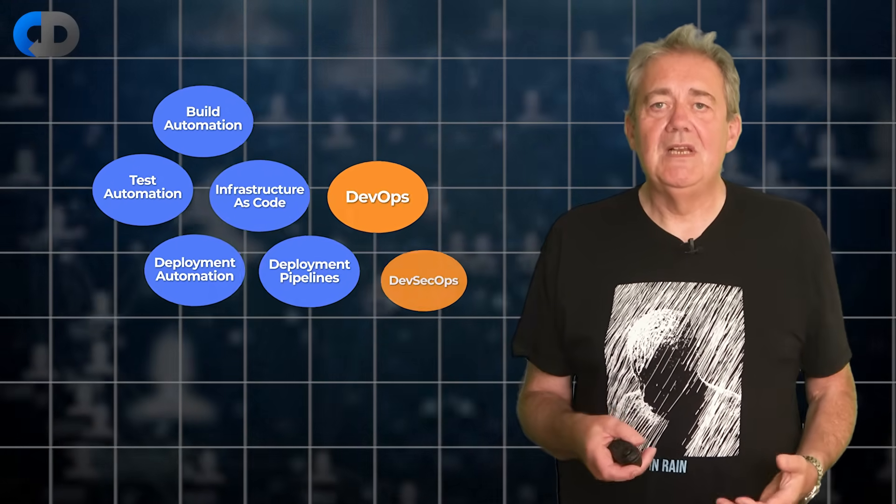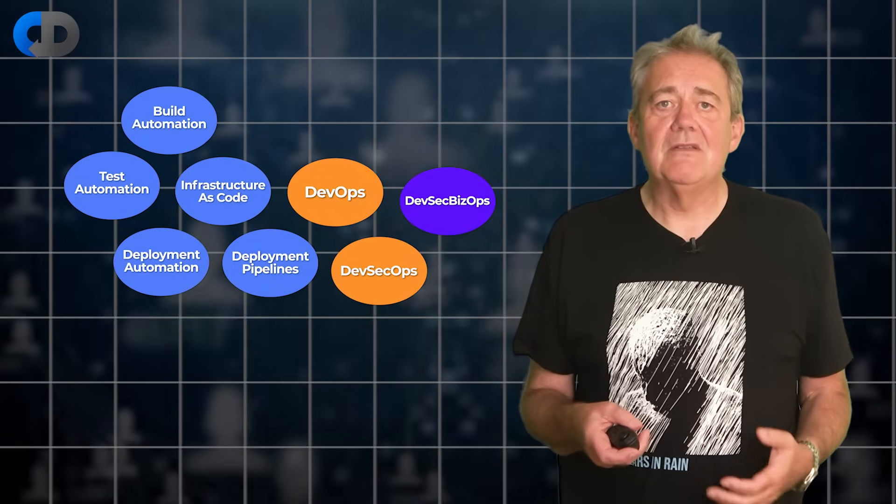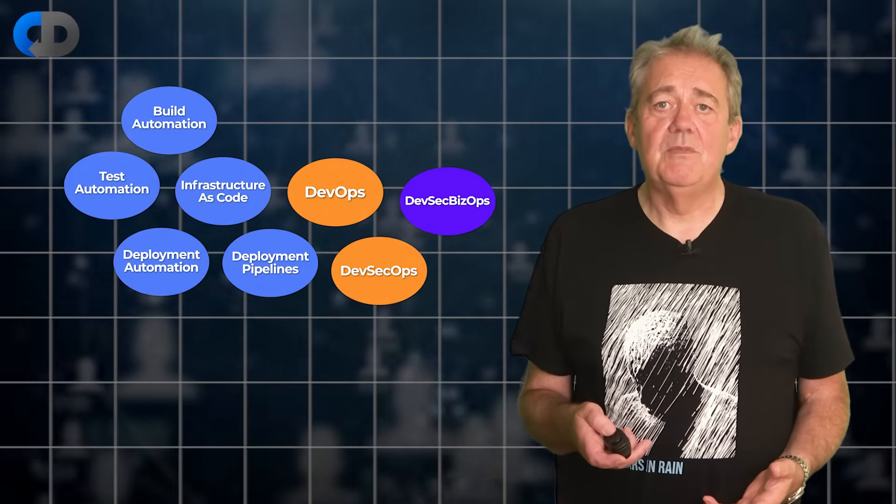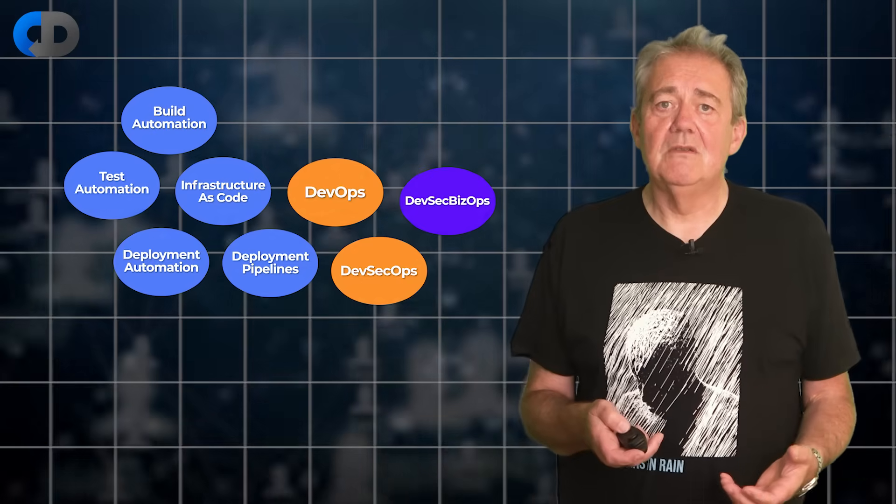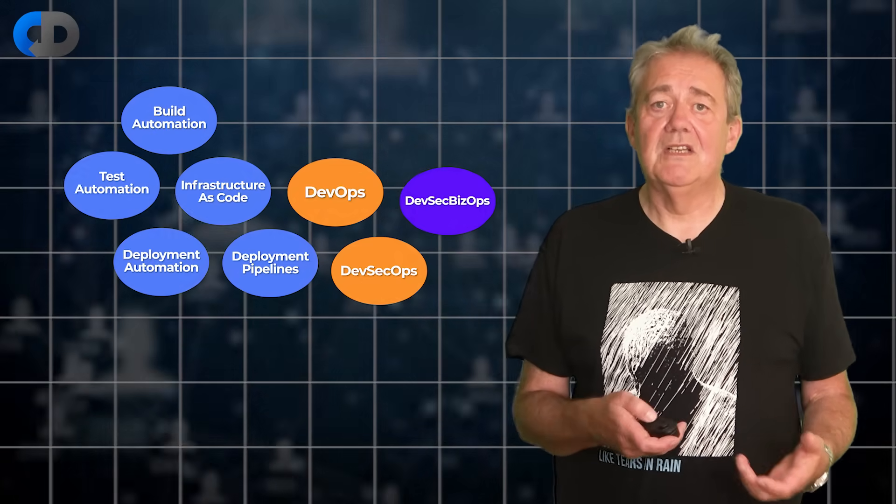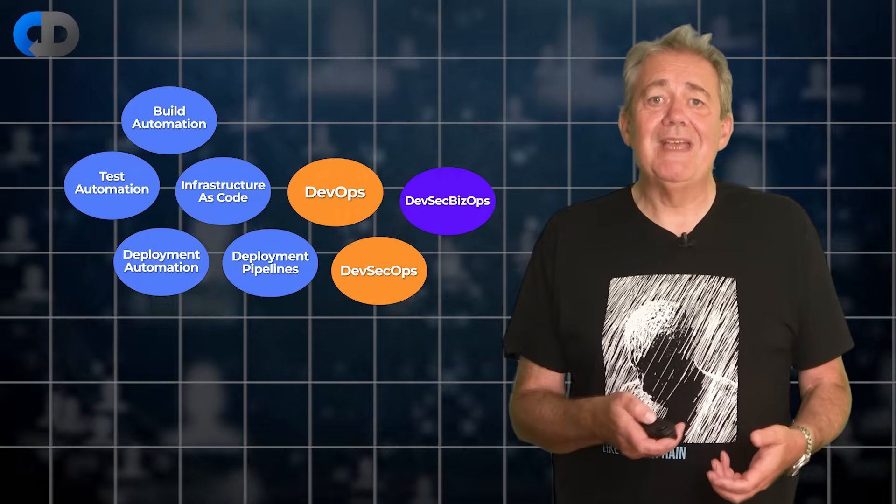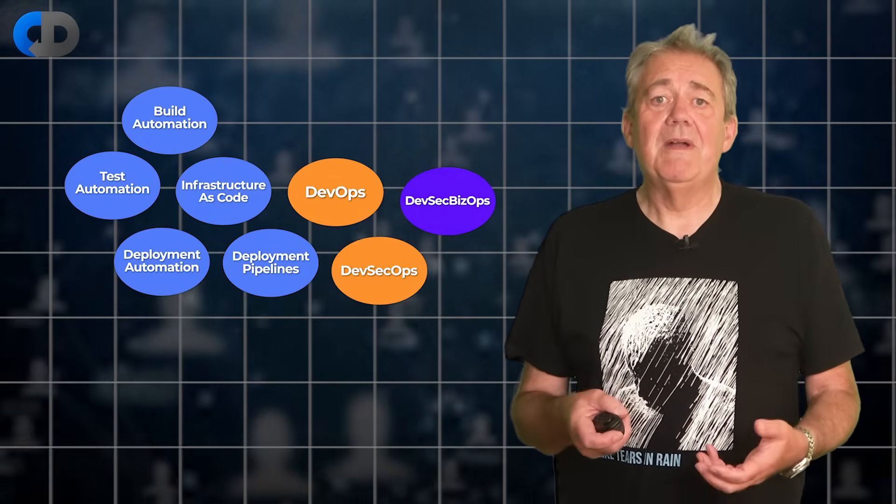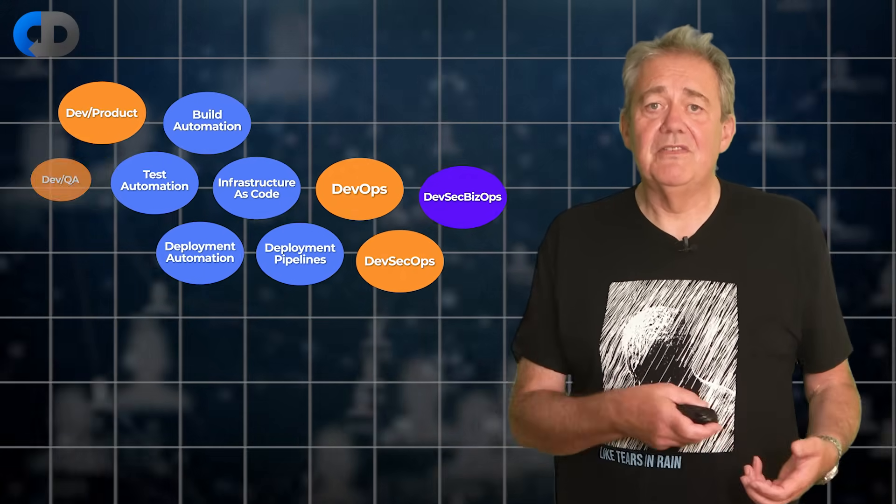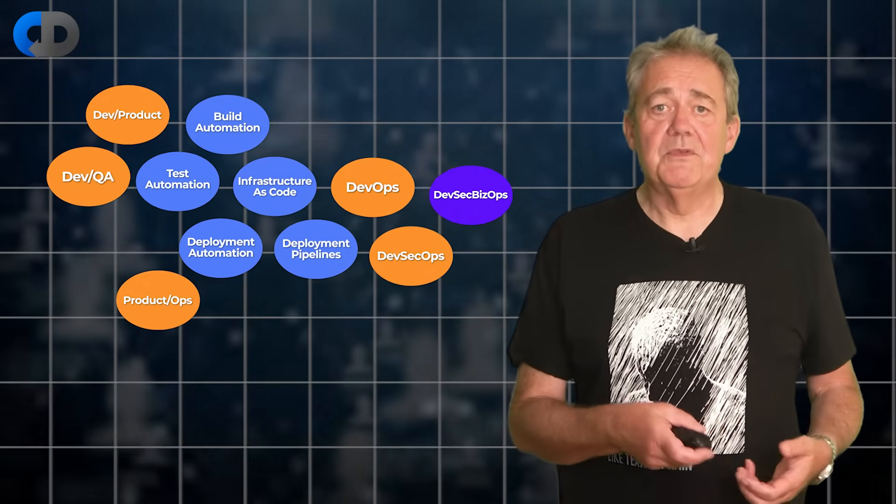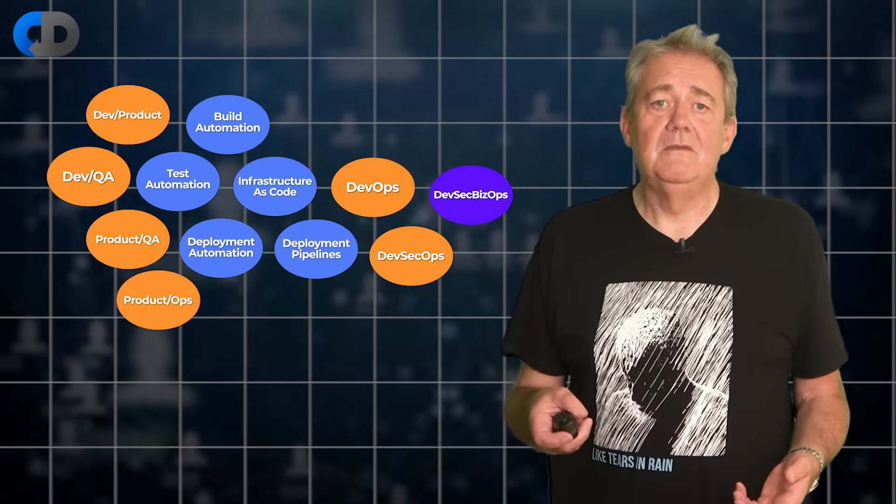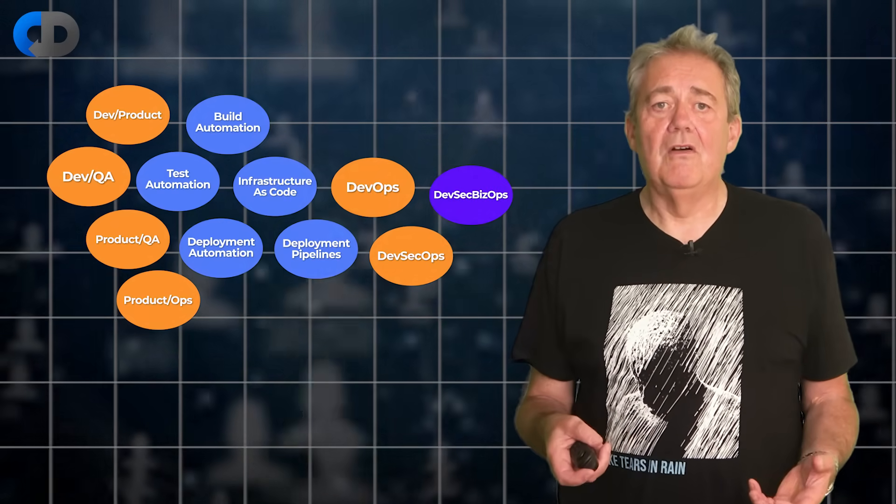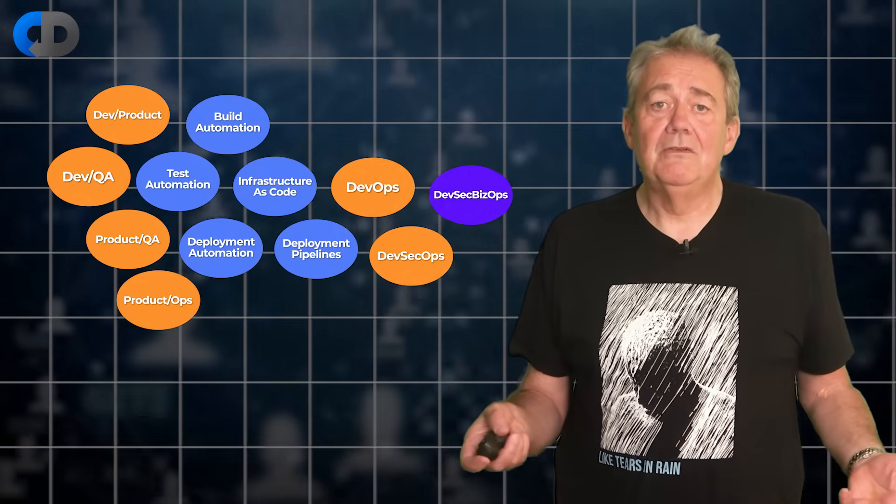And here's where we get into the limits of the name DevOps as a descriptive tool. If we are genuinely taking the narrow view of DevOps and thinking about only the relationship between Dev and Ops then while this is certainly important because you really aren't going to be able to do Continuous Delivery without effective collaboration between Dev and Ops, even the best DevOps collaboration is not enough on its own. What about the relationship between Dev and Product, Dev and QA, Product and Ops, Product and QA and so on. So we need to add these into our picture of the activities that are involved too. And that's still not enough either.